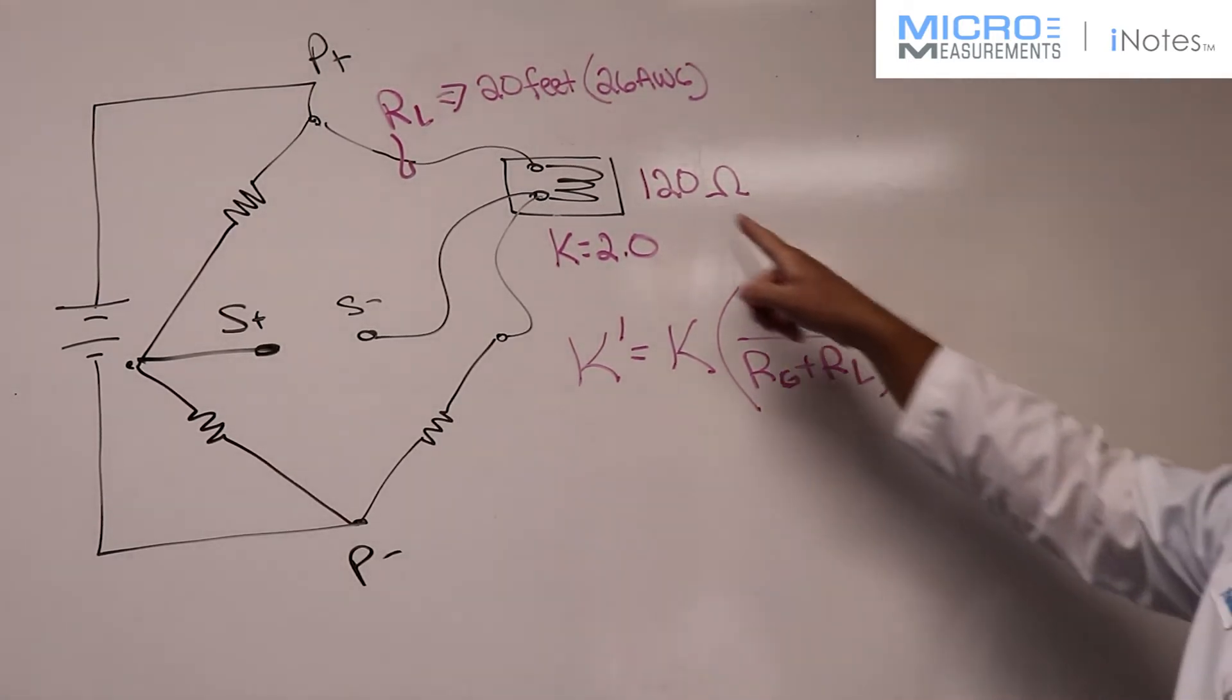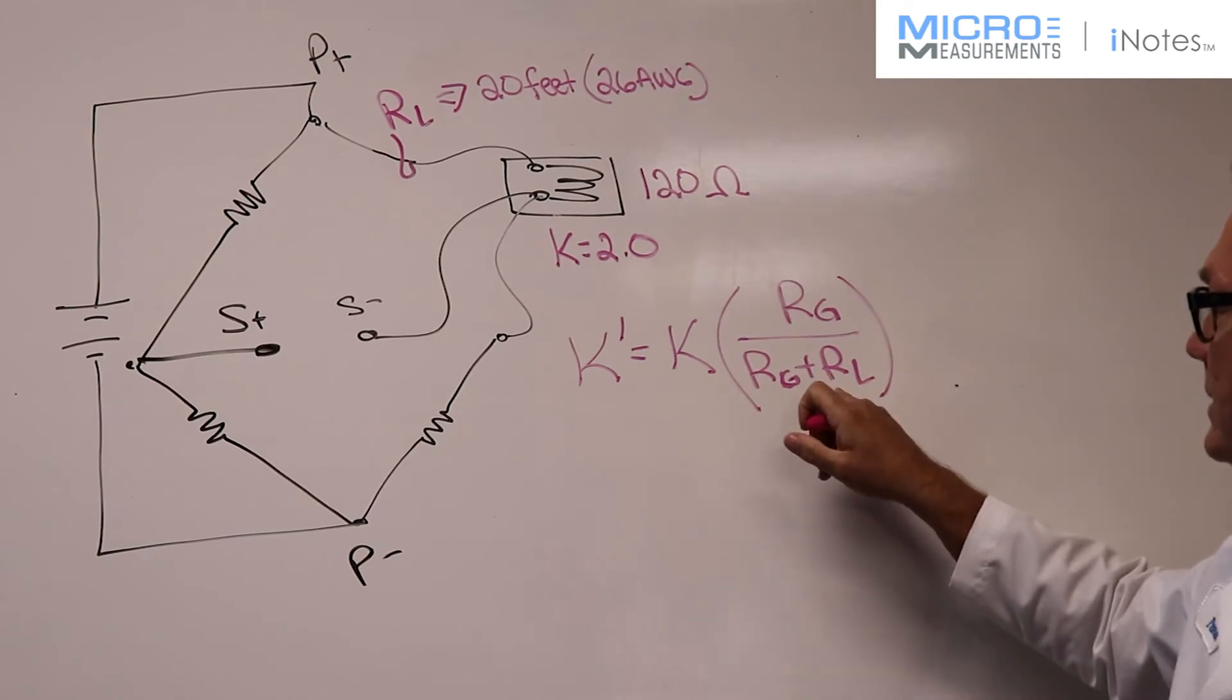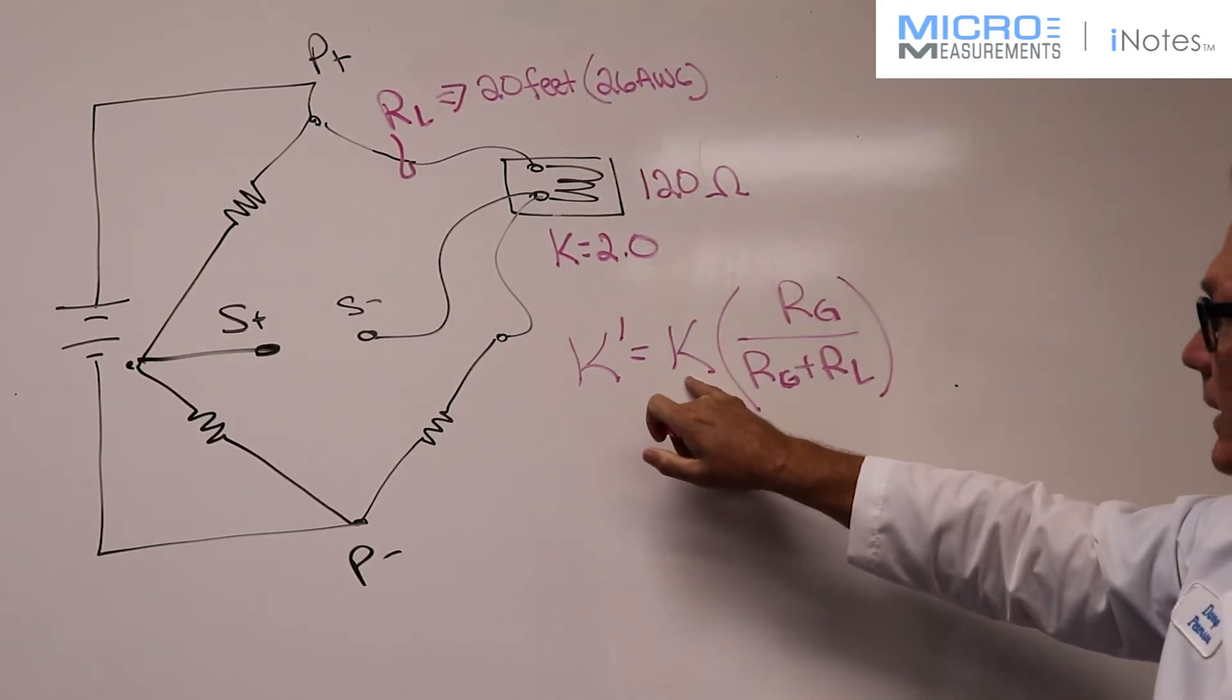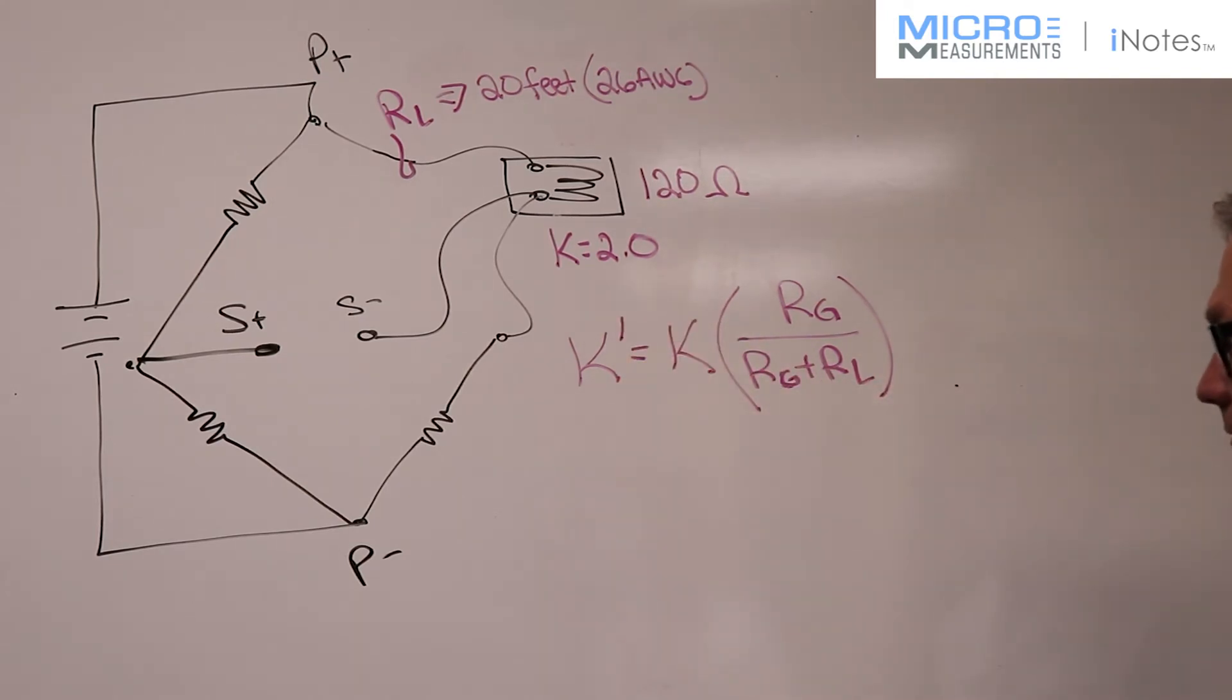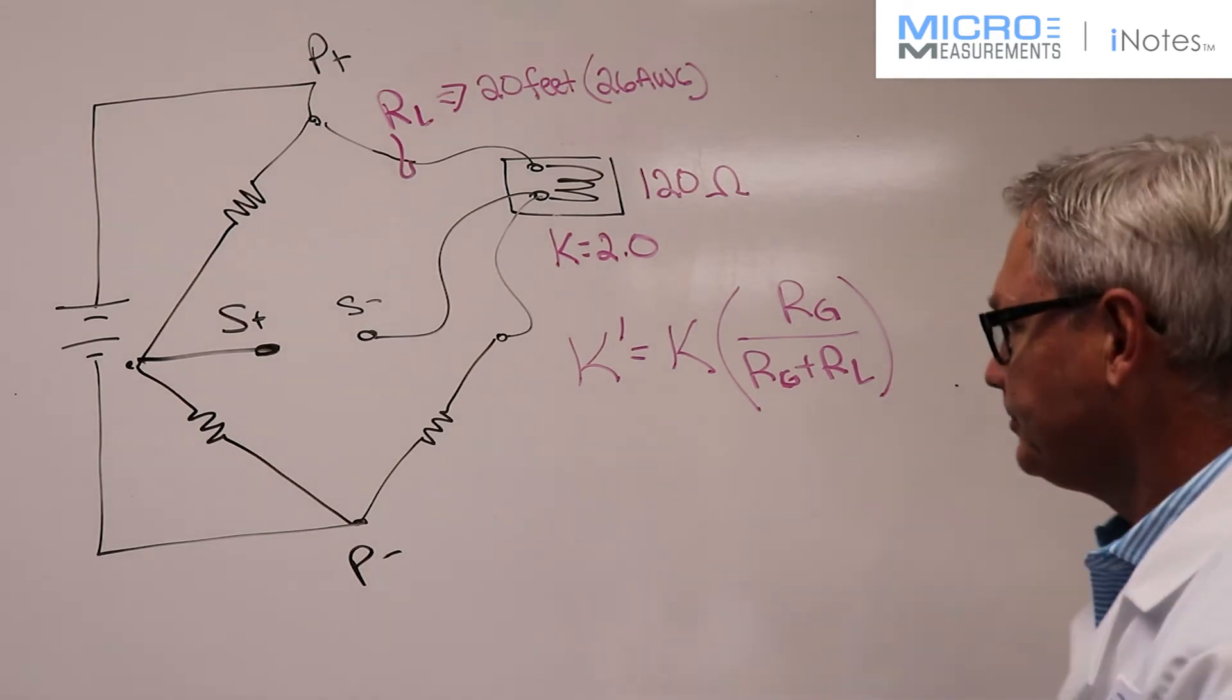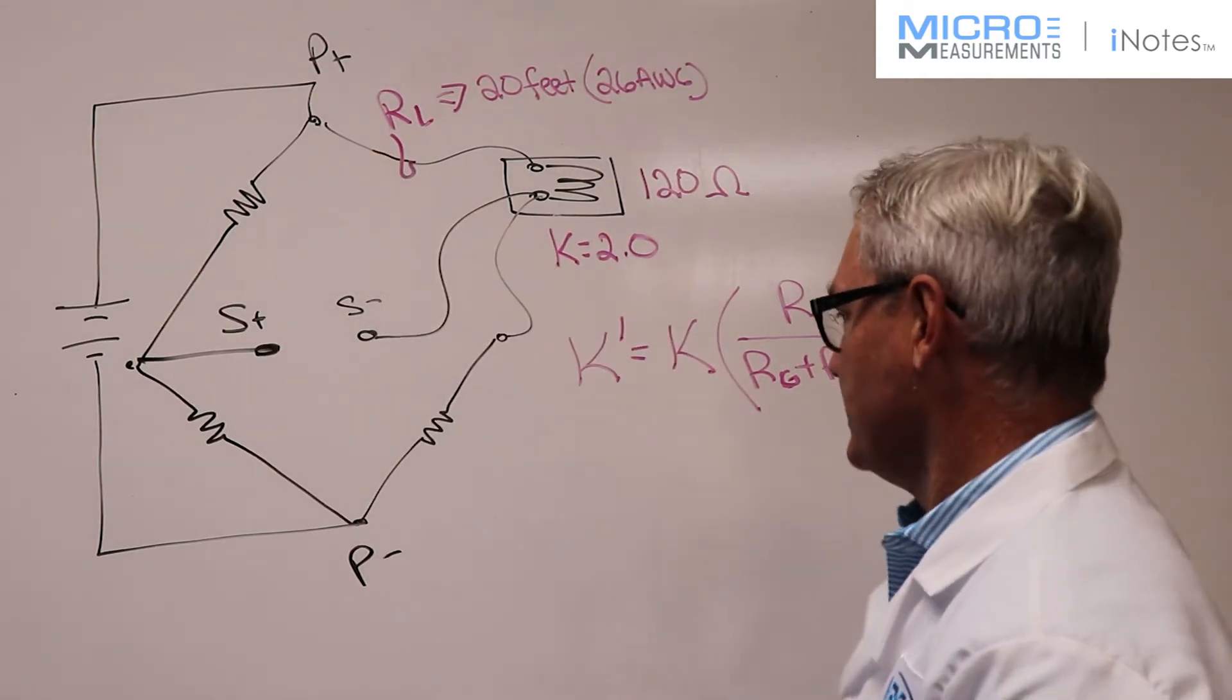So the resistance of the gauge is 120. The resistance of the lead wire, we're going to calculate it. The gauge factor we're going to assume is two. And then in the end, we're going to calculate what we would refer to as an effective gauge factor that has included this lead wire resistance.